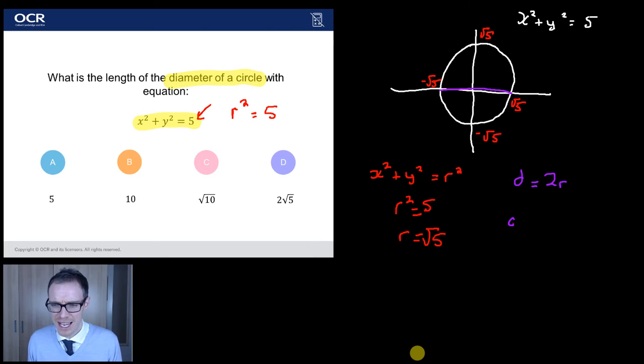So, my diameter of my circle is going to be two lots of the radius of my circle. And the radius of my circle, I've said before, is root 5. We've worked that out. So, my diameter is just two root 5.